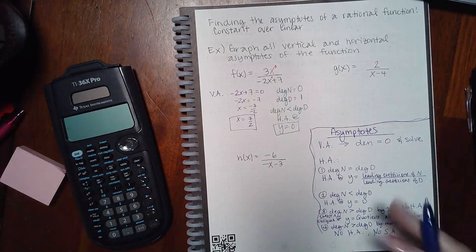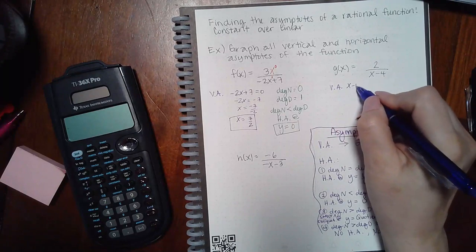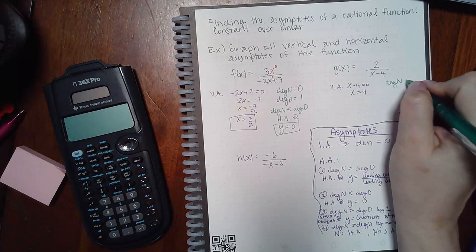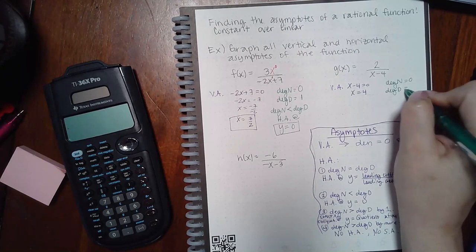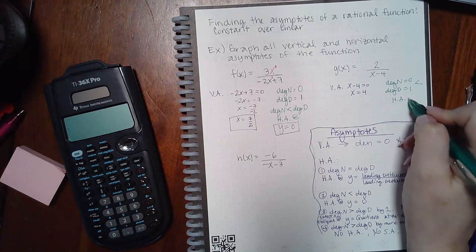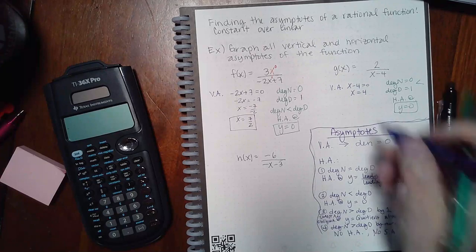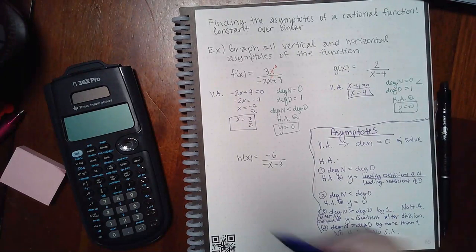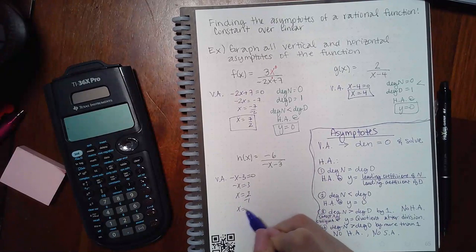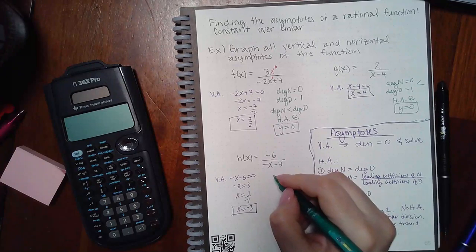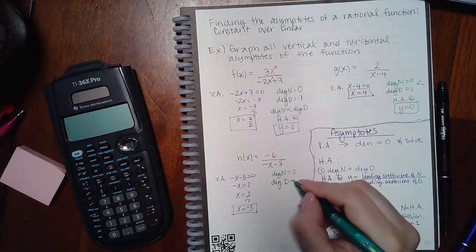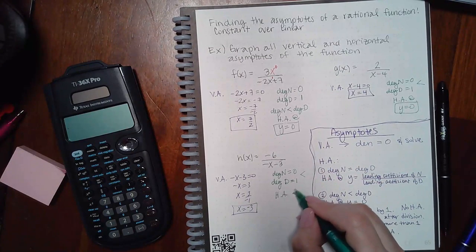Now for function g: for the vertical asymptote, we set the denominator equal to zero. For the horizontal asymptote, the degree of a constant is zero and the degree of a linear term is one, so the degree of the numerator is less than the degree of the denominator — horizontal asymptote at y equals zero. For the last function, same process: denominator equals zero gives the vertical asymptote, and comparing degrees gives a horizontal asymptote at y equals zero.